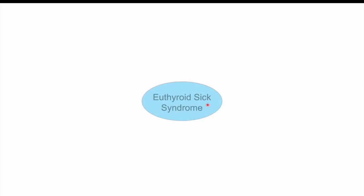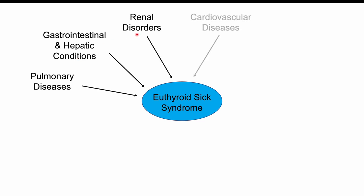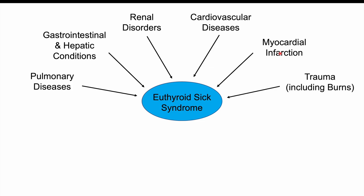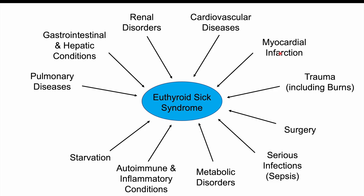Euthyroid sick syndrome occurs in the context of a non-thyroidal illness (NTI). Potential causes include pulmonary diseases; gastrointestinal and hepatic conditions such as Crohn's disease, ulcerative colitis, chronic hepatitis, and cirrhosis; renal disorders like kidney failure; cardiovascular diseases and myocardial infarction; trauma including burns and surgery; serious infections and sepsis; metabolic disorders; autoimmune and inflammatory conditions; starvation; and cancers or malignancies. All these conditions — whether acute or chronic — can lead to euthyroid sick syndrome, and the more serious the condition, the more likely it is to occur.